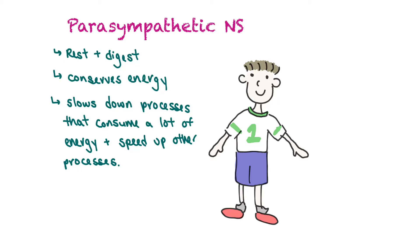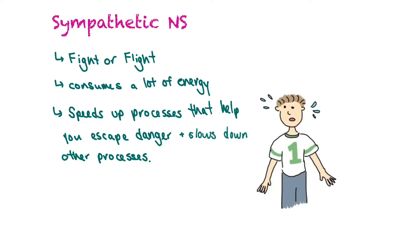Our sympathetic nervous system is known as our fight-or-flight response. This process consumes a lot of energy — it speeds up processes that help you escape from danger and slows down others. Imagine being chased by a bear: you could fight or run away. To get away quickly, your heart rate increases to transport oxygen more quickly, and your breathing rate increases to get more oxygen to your cells.